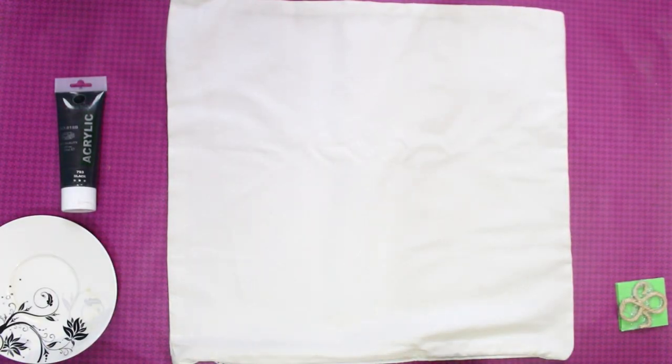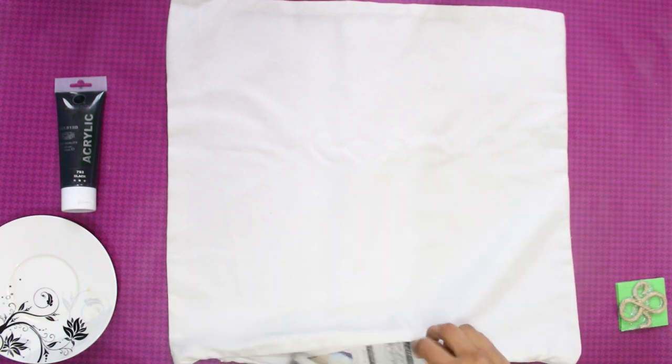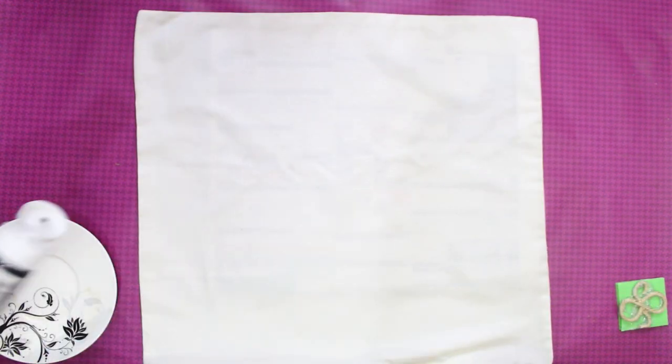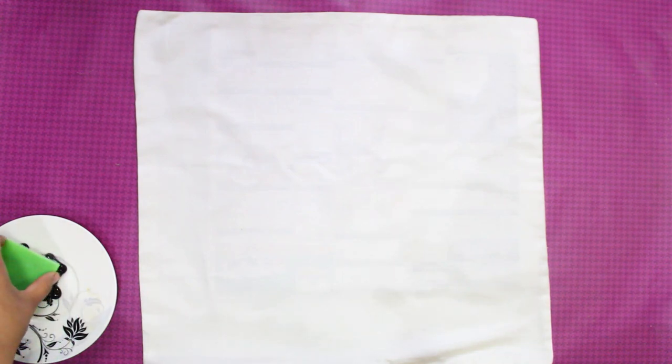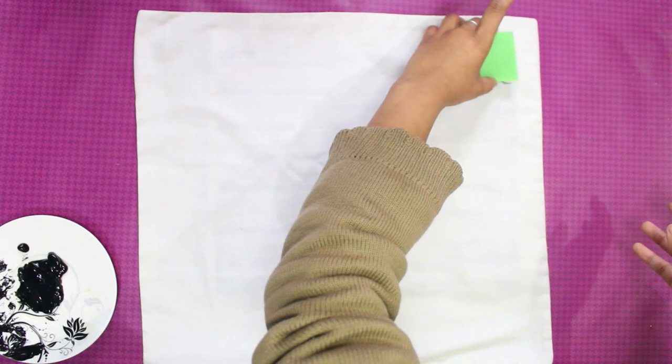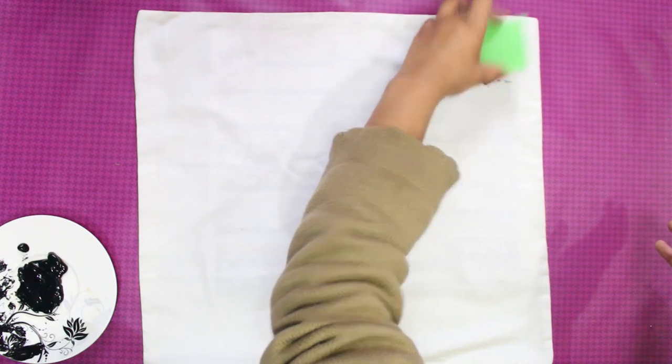First, I place the cushion by placing the newspaper between it. Then using some black acrylic paint, dip the stamp into the paint.